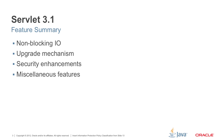There are four categories of features added in Servlet 3.1. The first one is non-blocking I/O. The second one is upgrade requirement. The third one is security enhancement. And finally, we will also have a miscellaneous category.